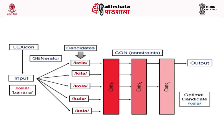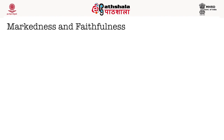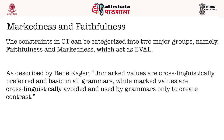OT has constraints and not rules, and these constraints are universal with their own ranking; they are violable with a language-specific ranking. The candidate that incurs the least amount of violation or the least serious violation is chosen as the optimal candidate. The constraints in OT can be categorized into two major groups. As described by Kager, unmarked values are cross-linguistically preferred and basic in all grammars, while marked values are cross-linguistically avoided and used by grammars only to create contrast.